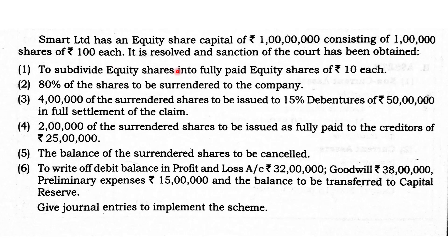Numerical example: Smart Limited has an equity capital of Rs. 1 crore consisting of 1 lakh shares of Rs. 100 each. A reorganization scheme has been reserved and sanction of the court has been obtained. First, subdivide equity shares into fully paid equity shares of Rs. 10 each. Second, 80% of the shares are to be surrendered to the company. Third, 80% of the surrendered shares to be issued to 15% debenture holders of Rs. 50 lakhs in full settlement of their claim.